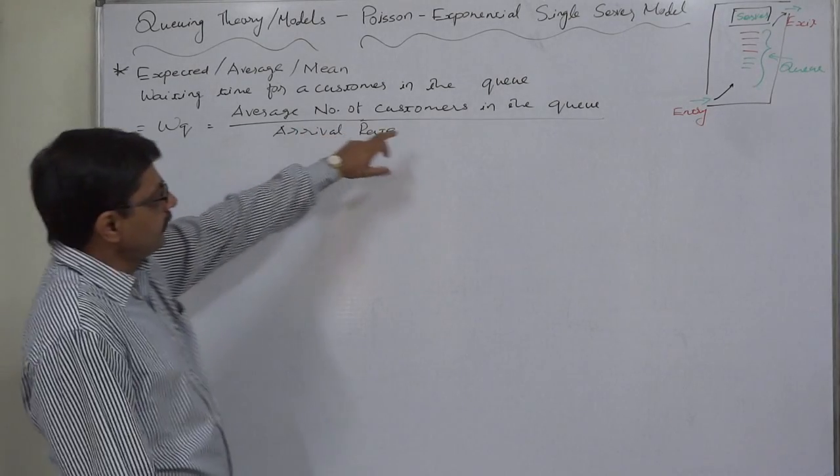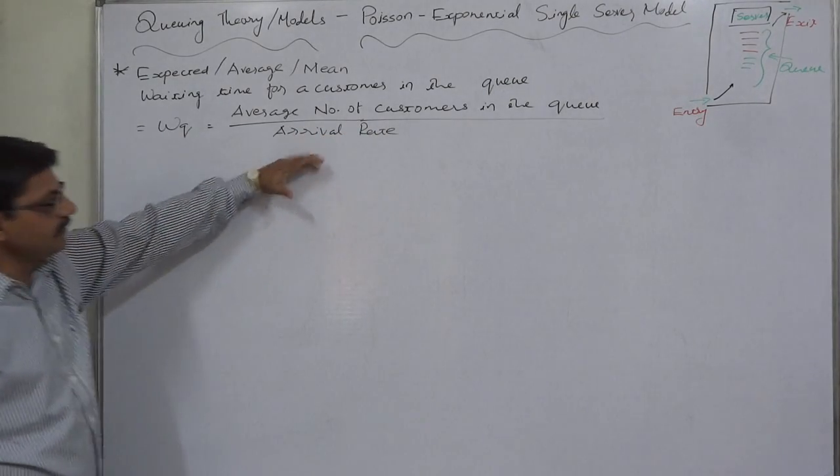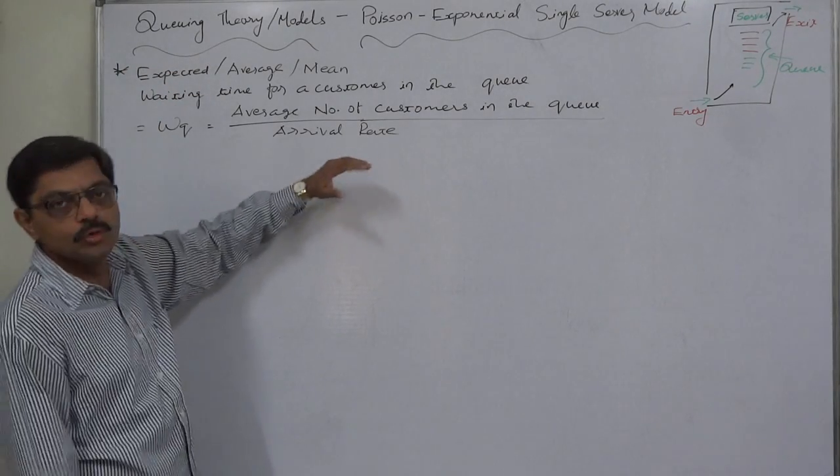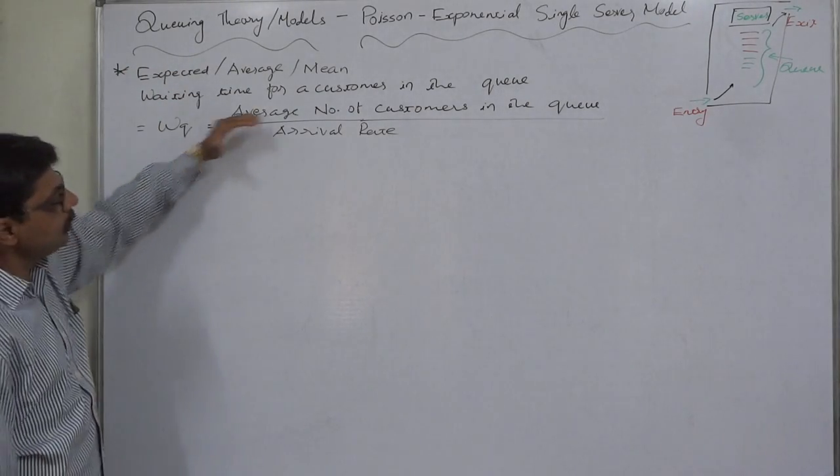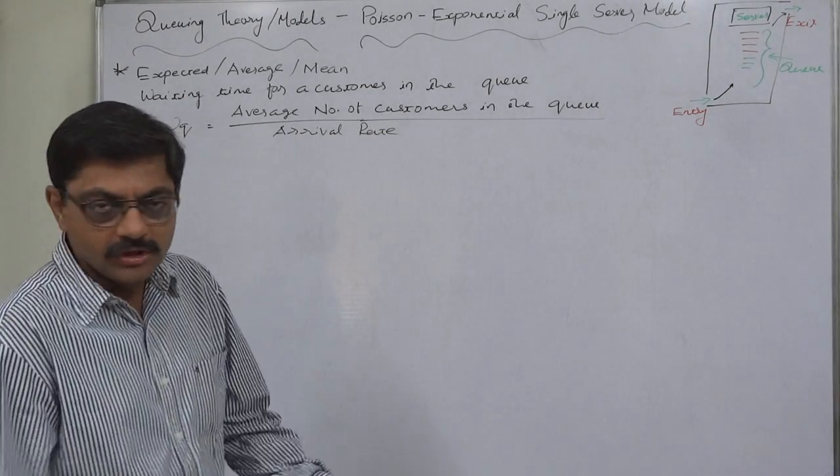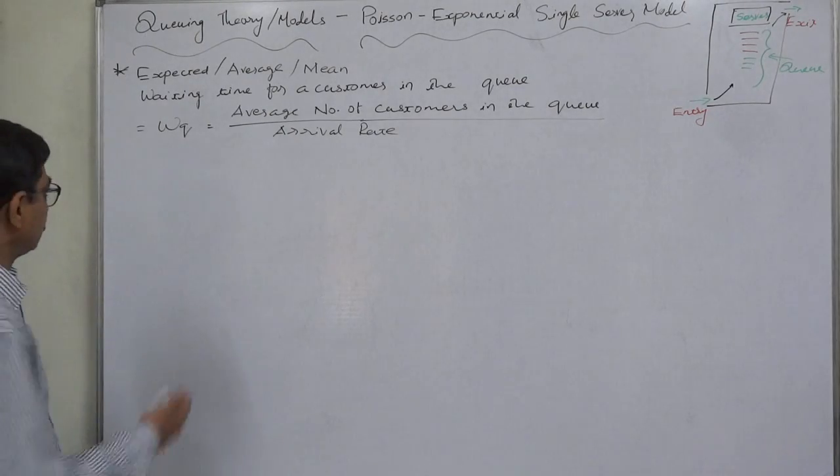Average number of customers in the queue divided by arrival rate. That means the average waiting time for a customer in the queue is the ratio of average number of customers in the queue to the arrival rate. Both are in terms of number of customers.